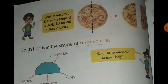On page number 98, what is Jimbo telling us? Look at my pizza. It is in the shape of a circle. Let me cut it into two halves. Each half is in the shape of a semicircle. Semi in semicircle means half. Semicircle means half circle.